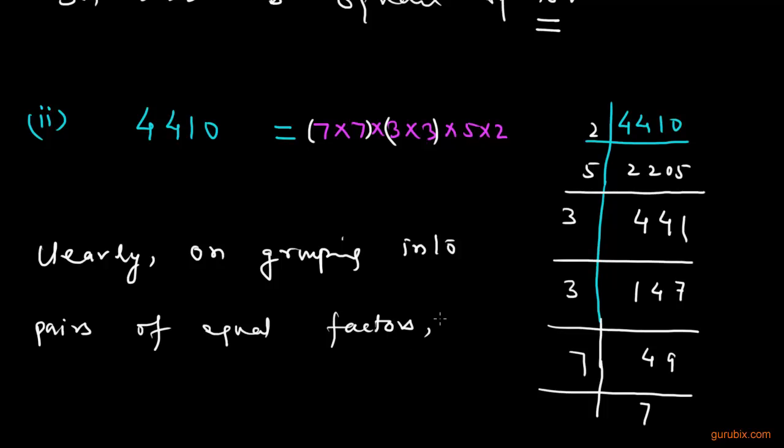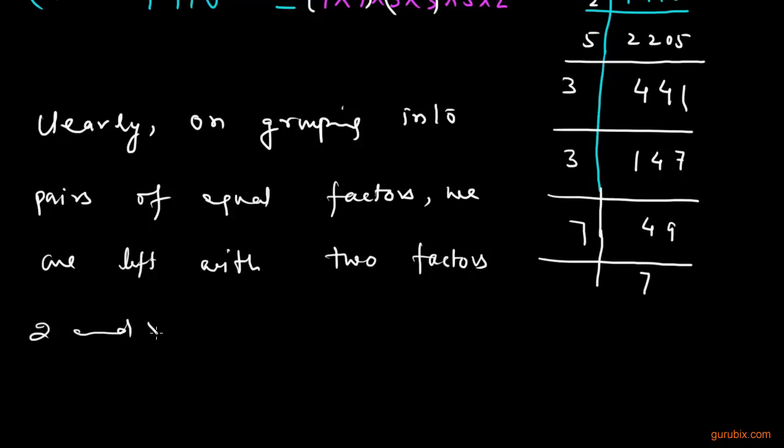we are left with 2 factors, 2 and 5, which cannot be paired. Thus, we conclude 4410 is not a perfect square.